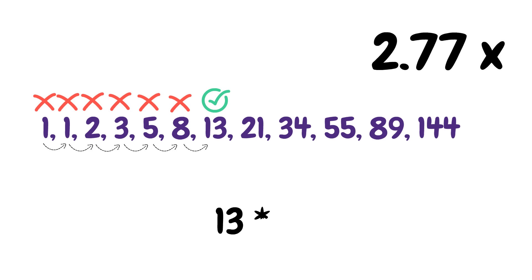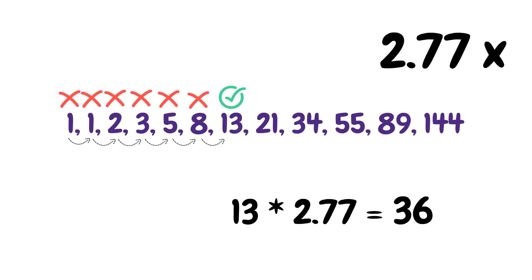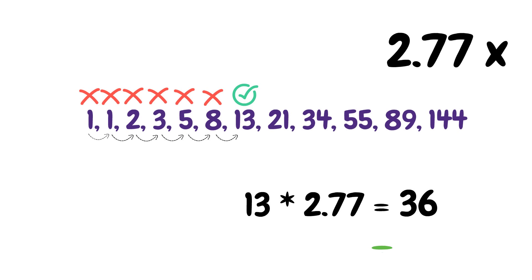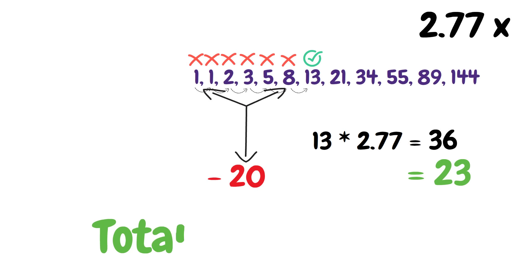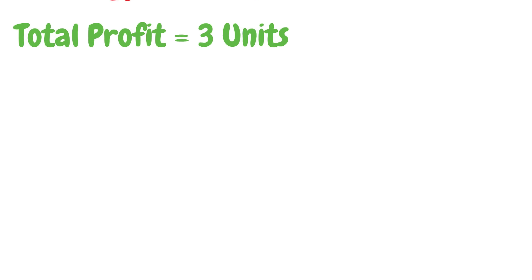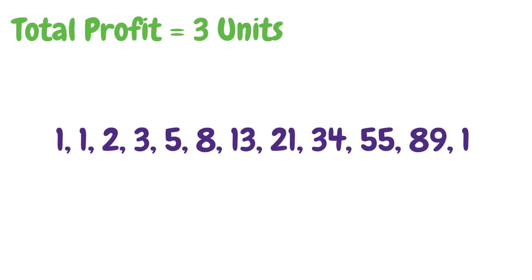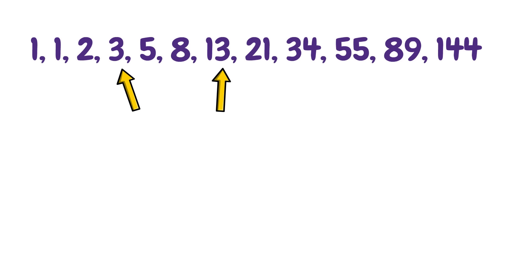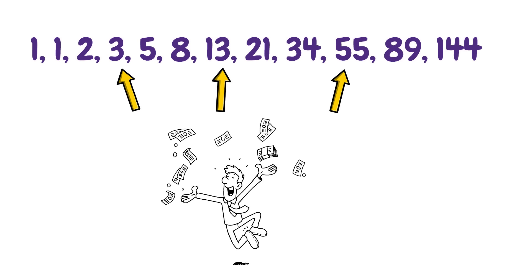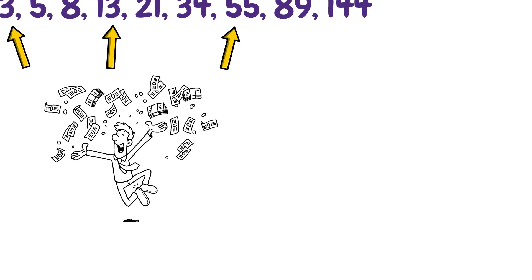13 multiplied by our 2.77 return equals 36. Remember, this is a return of 36, so with an original bet of 13, that gives us a profit of 23. If we add up our previous losses, this only totals 20. Therefore, we have won 3 units over the entire Fibonacci progression. And no matter where you are in the Fibonacci sequence, a return of 2.77x on your bet will complete your Fibonacci sequence, turning it into a profitable one.